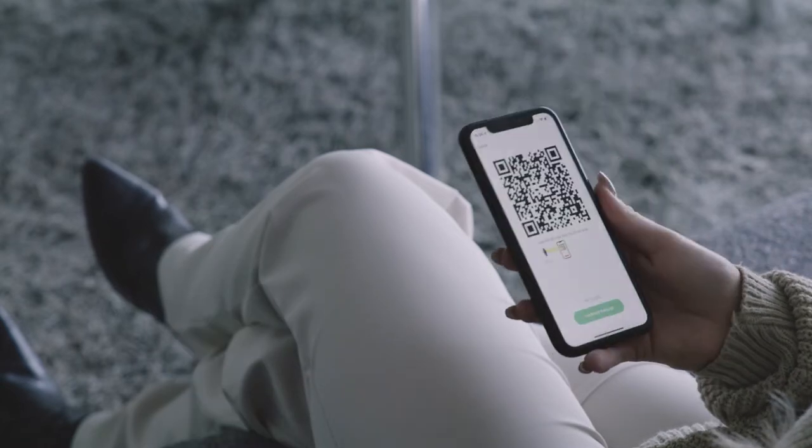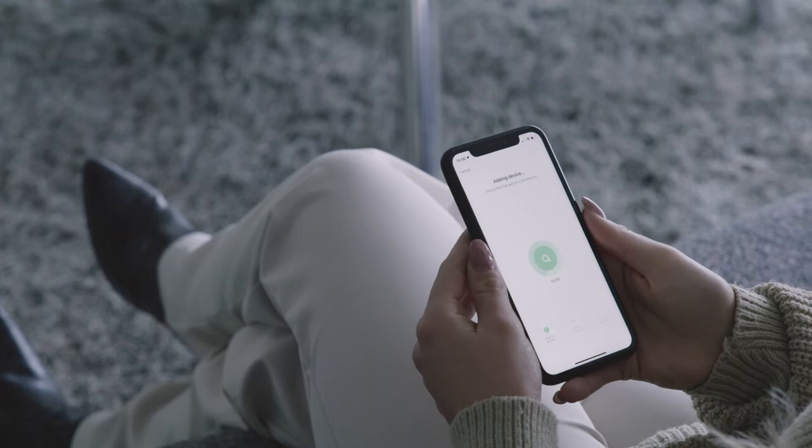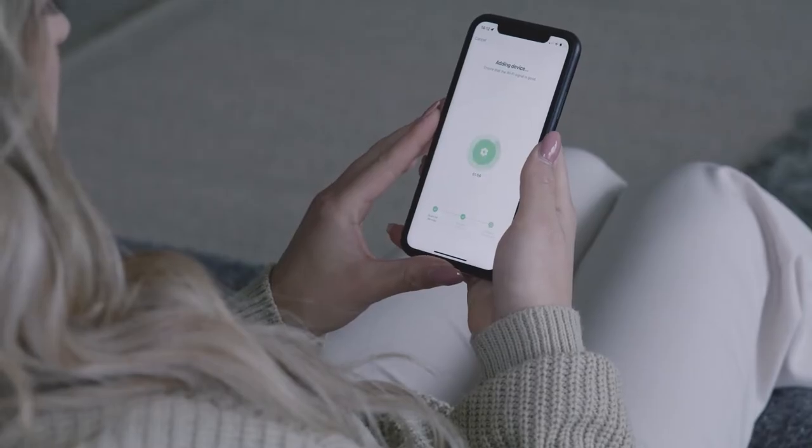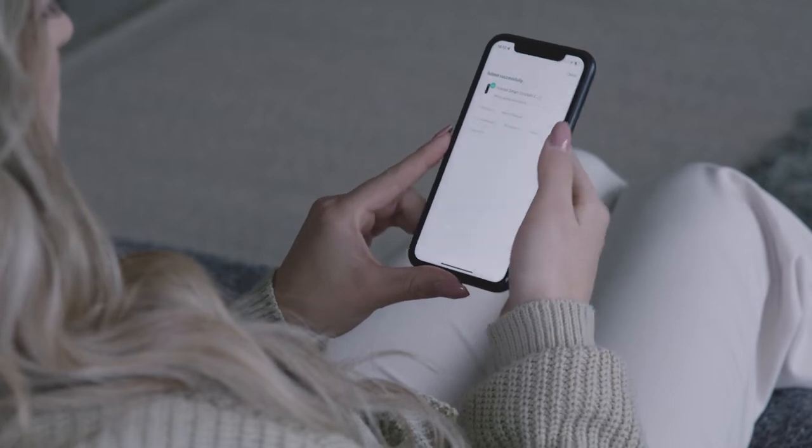After you hear the prompt tone, tap the button to continue. It is now connected with your Wi-Fi. You can give your Smart Doorbell 2 a name and assign it to a room.